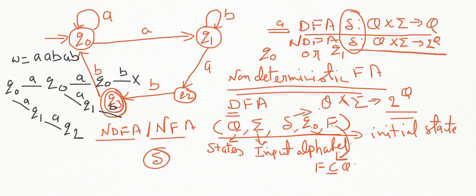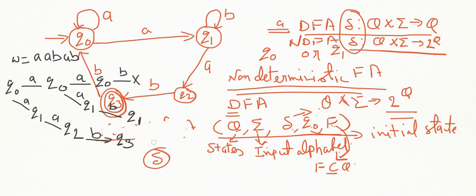For q₀, the b-transition is not defined so that path ends. q₁ upon reading b remains on q₁, while q₂ upon reading b goes to q₃. We have now processed the symbols a, a, b. Next symbol is a; after reading a, q₁ goes to q₂. For q₃, a is not defined, so we are left with one path. Next symbol is b; q₂ upon reading b reaches q₃.